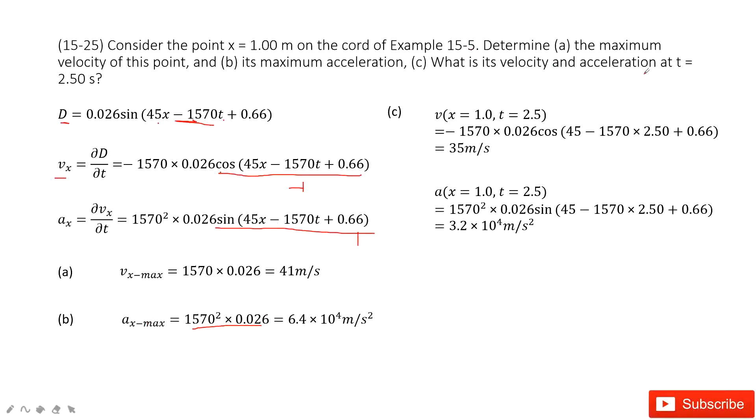Next one, we need to find the velocity and acceleration at t equal to 2.5 seconds. In this one, it tells us that x is 1 meter. So we just input x and t in the function. We get the answer there. Similarly, we input x equal to 1, t equal to 2.5 in the acceleration function. Get the answer there.